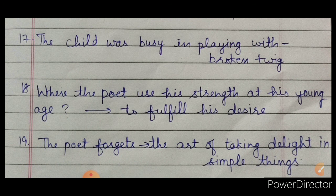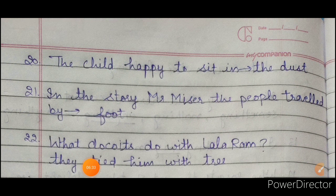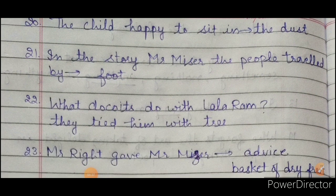The 19th question: 'The poet forgets dash.' What does the poet forget? The poet forgets the art of taking delight in simple things — finding happiness in small things. The 20th question: 'The child is happy to sit in dash.' Where is the child happy sitting? In dust — in the mud.